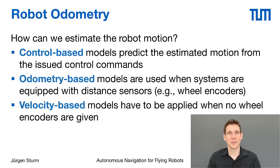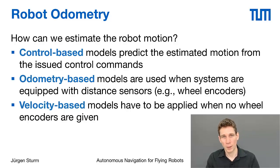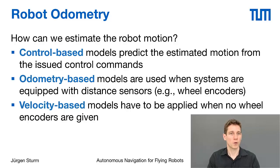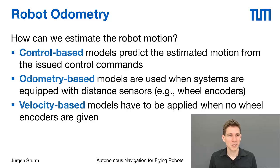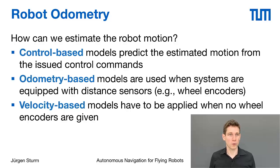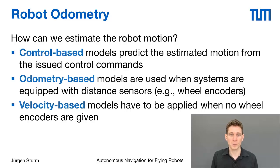This brings us to robot odometry, because very often we want to estimate the robot motion from its sensors. There are different ways of obtaining such robot motion. First, we typically know what motion commands we gave to the robot, though we never know exactly whether those controls were executed properly. From the controls — for example, joystick commands sent to a quadrotor — we can make predictions about the resulting robot motion.